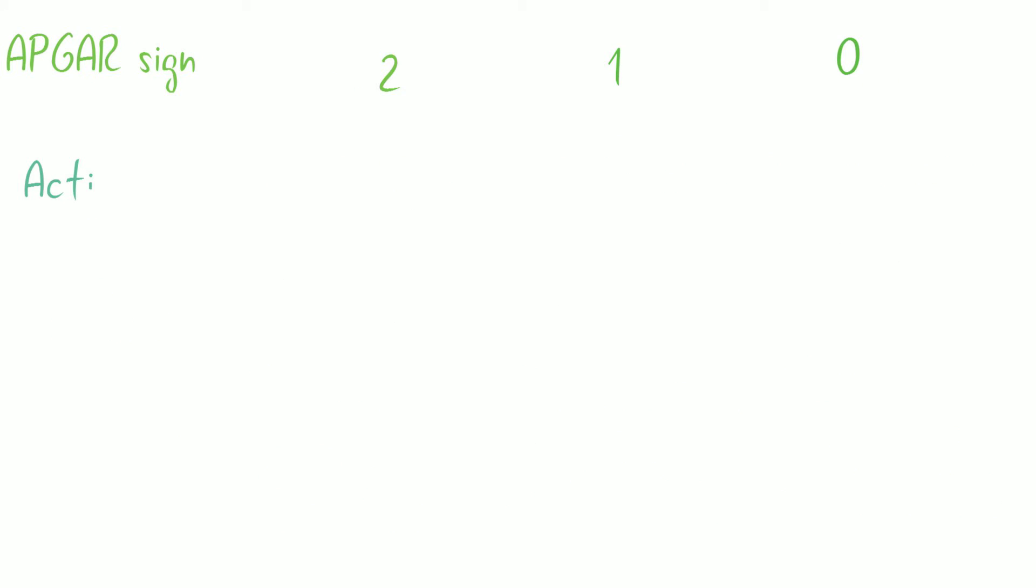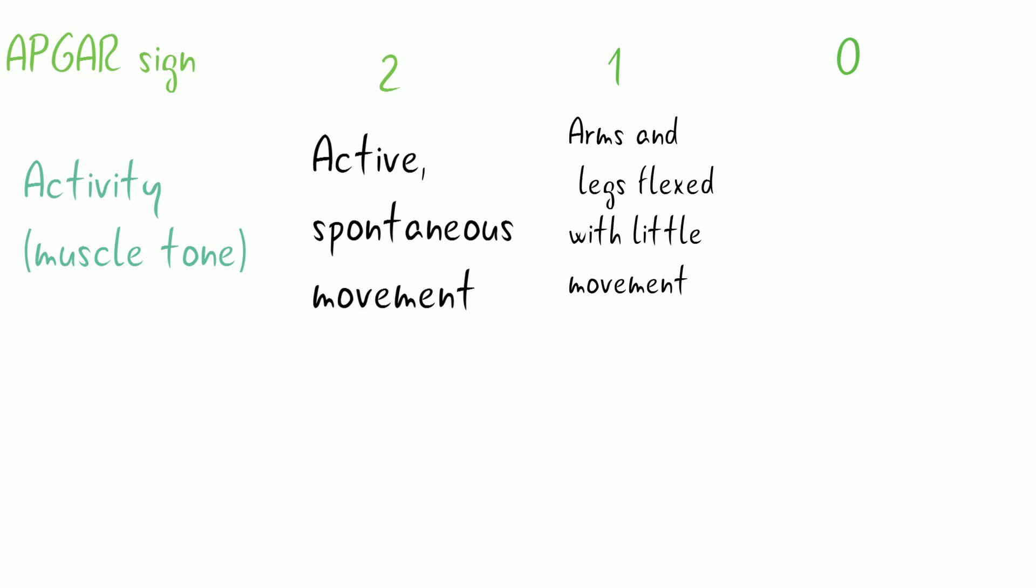For Activity (muscle tone), a score of 2 is given for active spontaneous movement. 1 is given for arms and legs flexed with little movement. 0 is given for no movement, floppy tone.